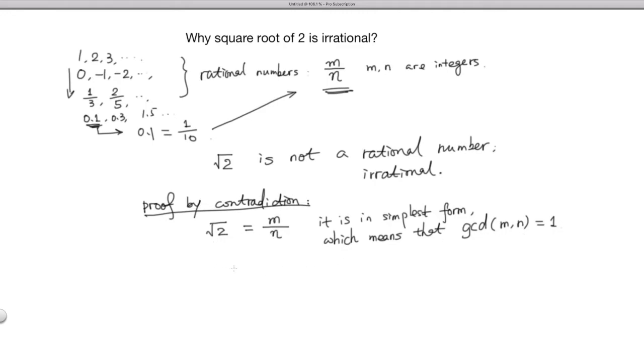We're assuming square root 2 equals m over n. So that means square root 2 times n equals m. We're multiplying n by both sides. And then, this means if we square both sides, it means 2n squared equals m squared.